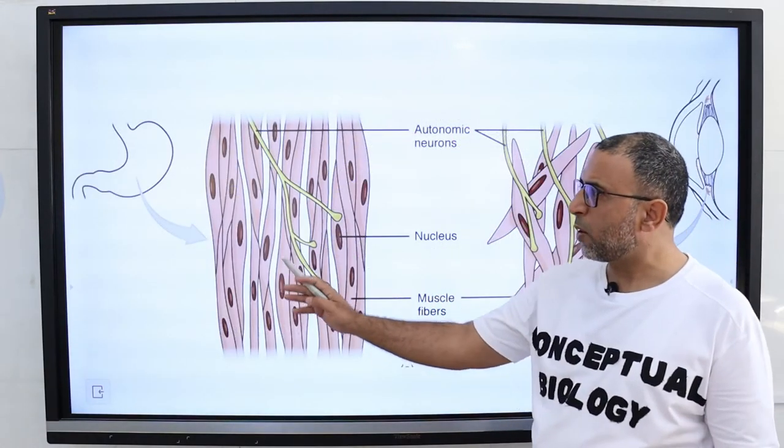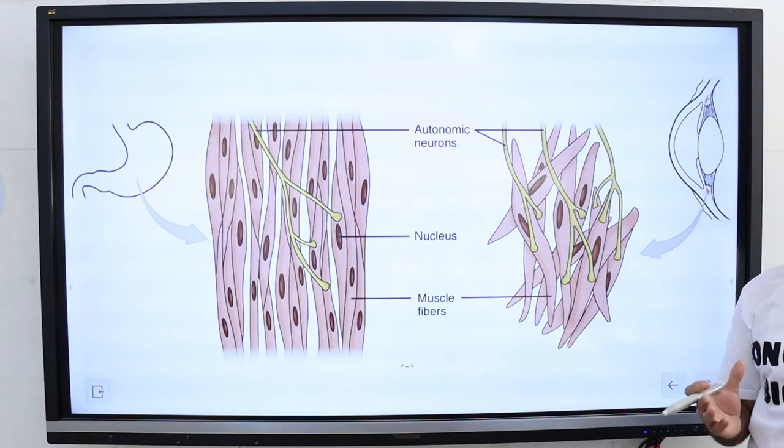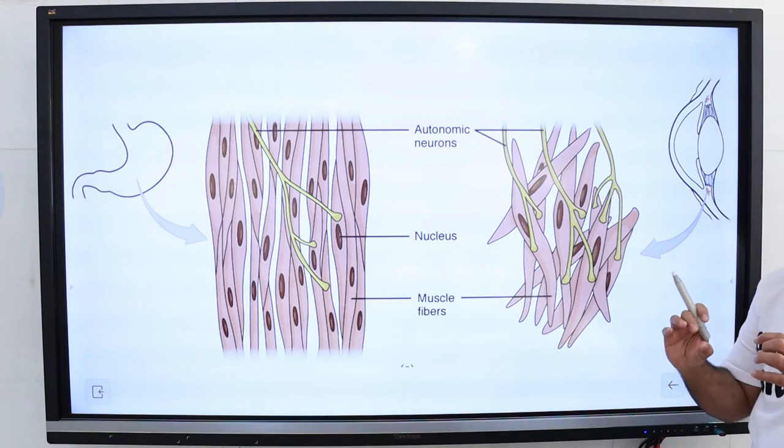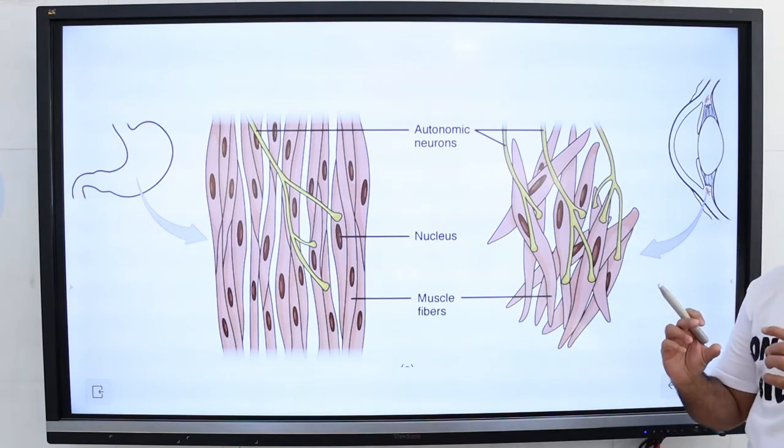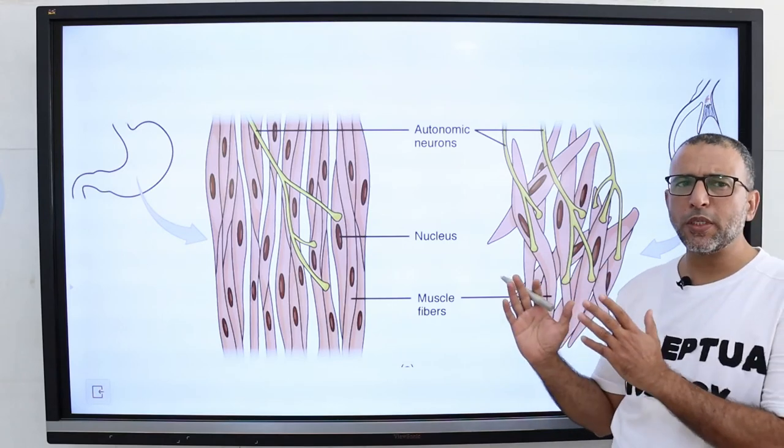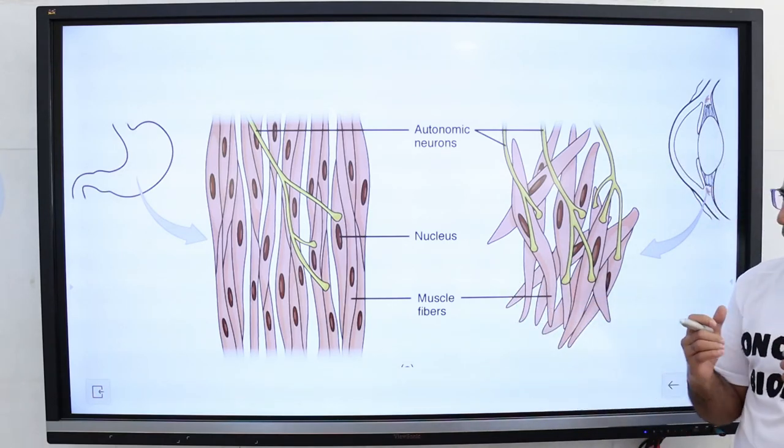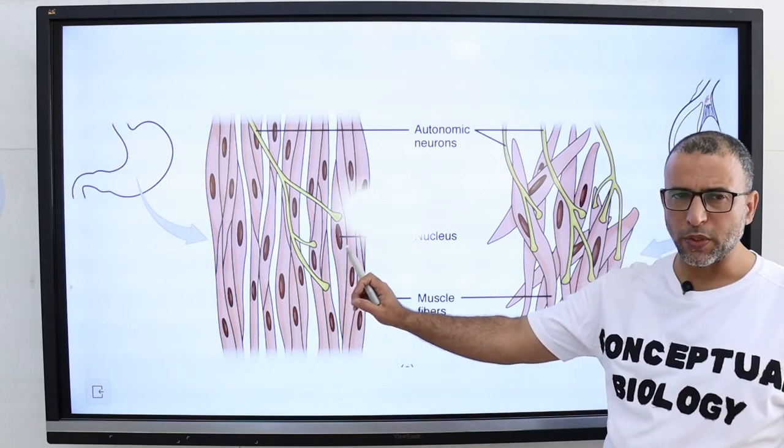Smooth muscle cells, which are present in the stomach and eye, are not striated because their actin and myosin filaments are not organized into myofibrils or sarcomeres. The fibers of smooth muscle tissue function as a unit and are connected by gap junctions.